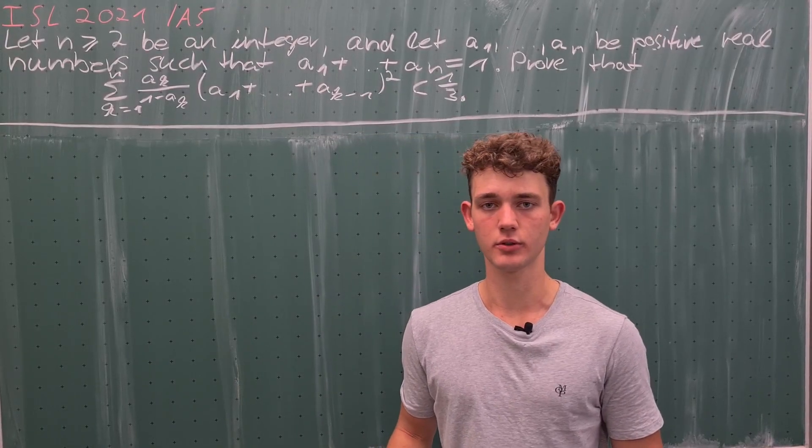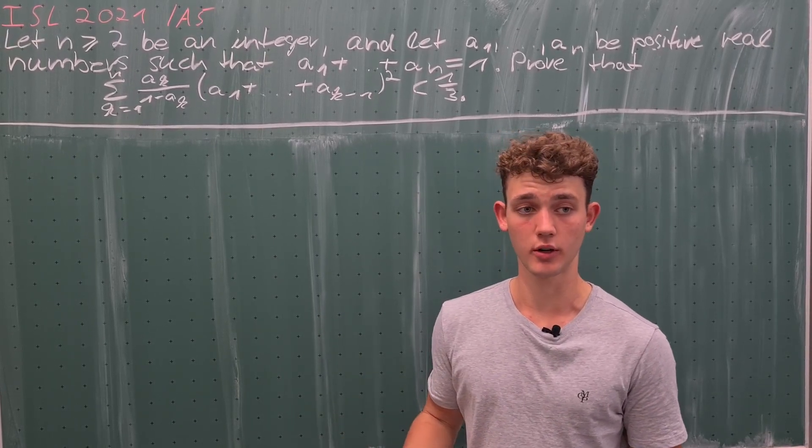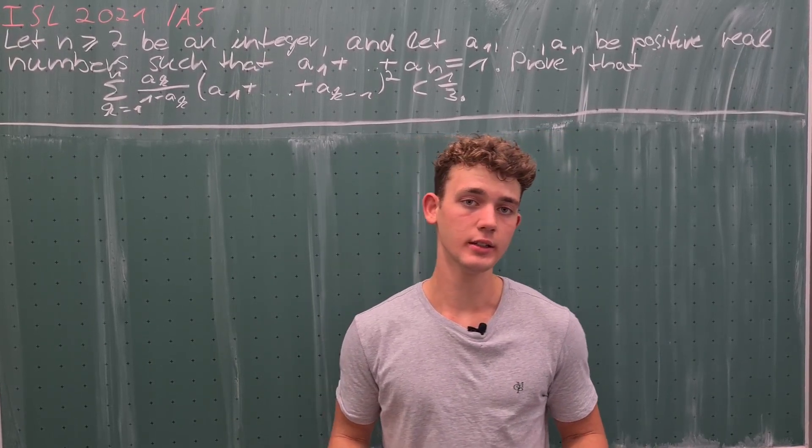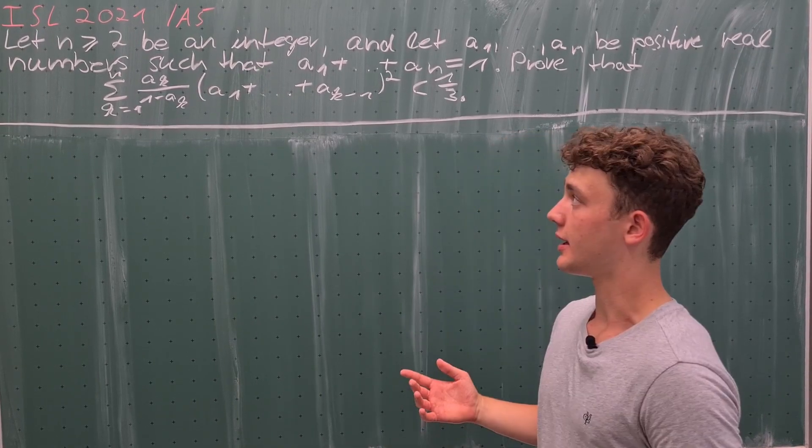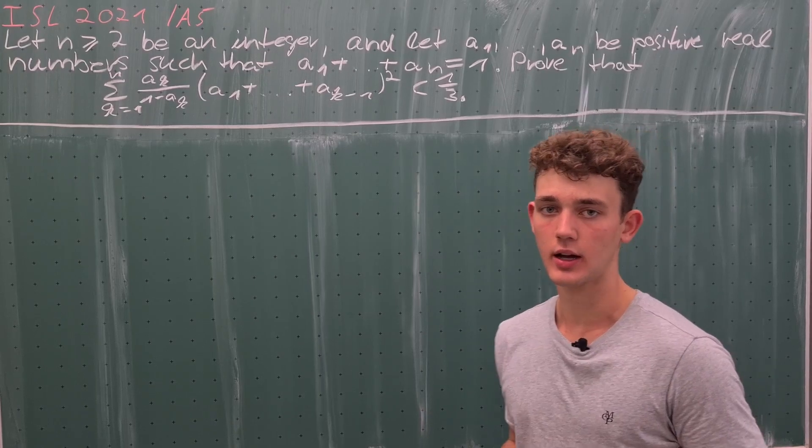Hey guys, today I want to present a solution of IMO Shortlist 2021 problem A5. First, let's have a look at the problem statement. Let n greater than or equal to 2 be an integer, and let a_1 up to a_n be positive real numbers such that their sum is equal to 1.